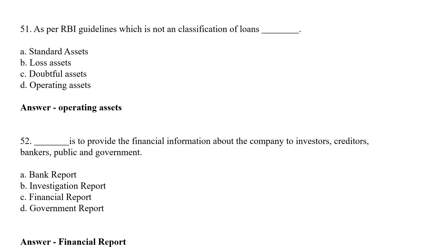As per RBI guidelines, which is not a classification of loan? Option A: Standard Asset, Option B: Loss Asset, Option C: Doubtful Asset, Option D: Operating Asset. The correct answer is Option D — Operating Asset.